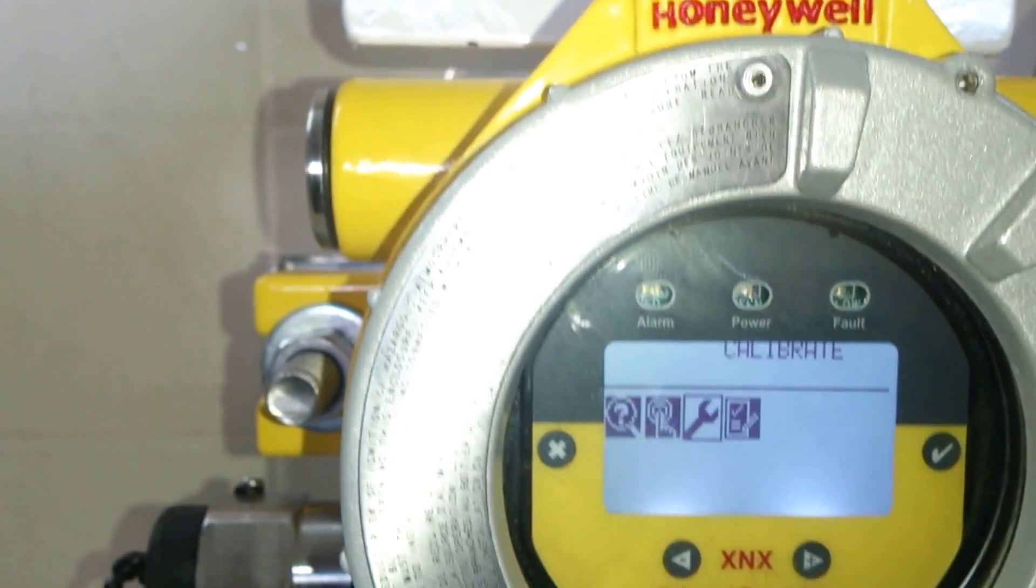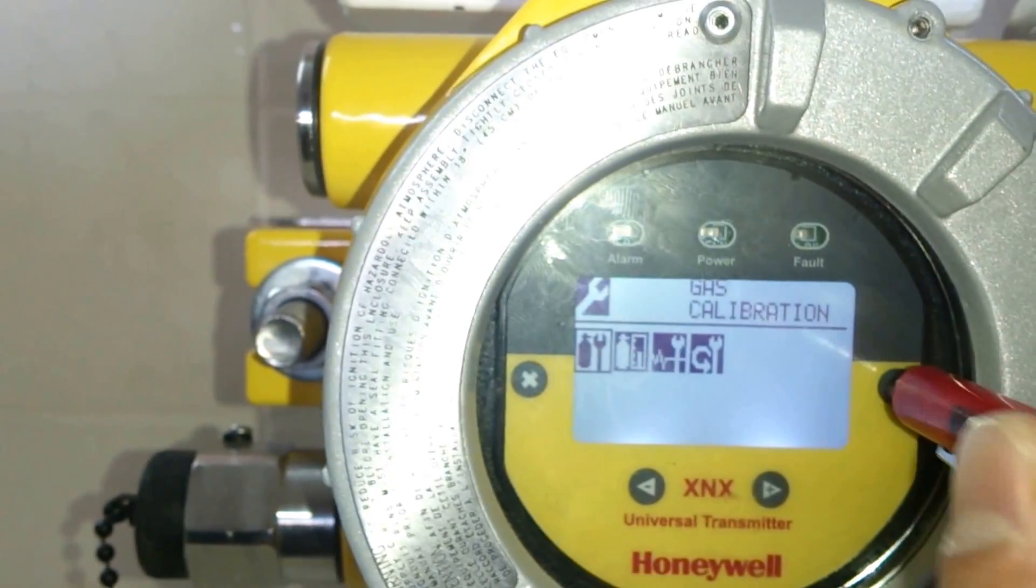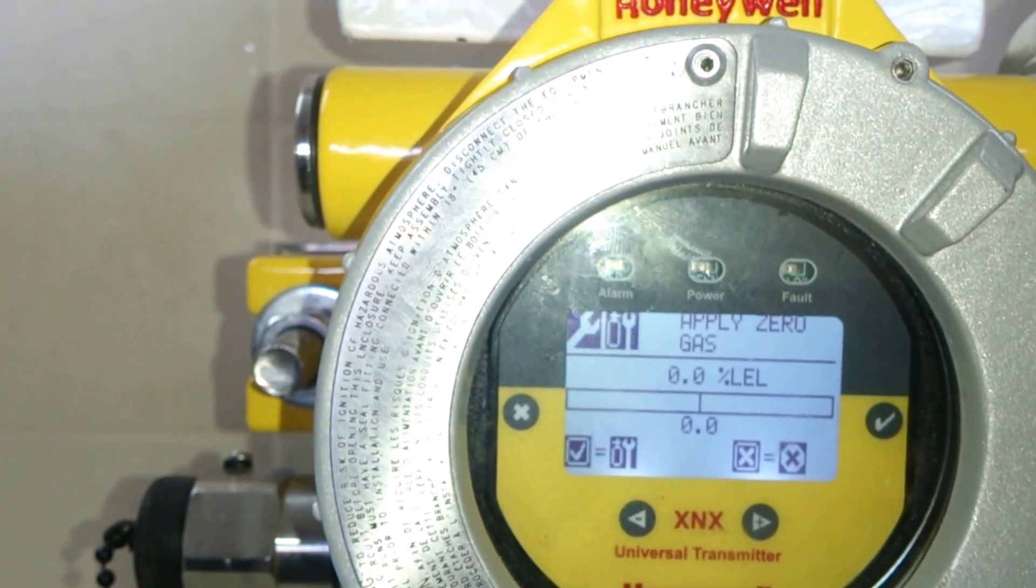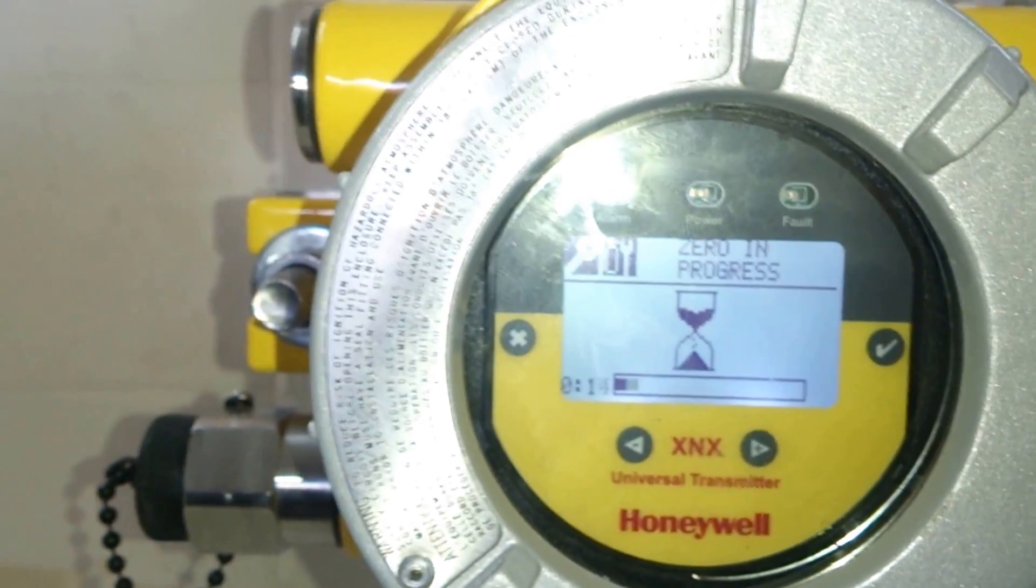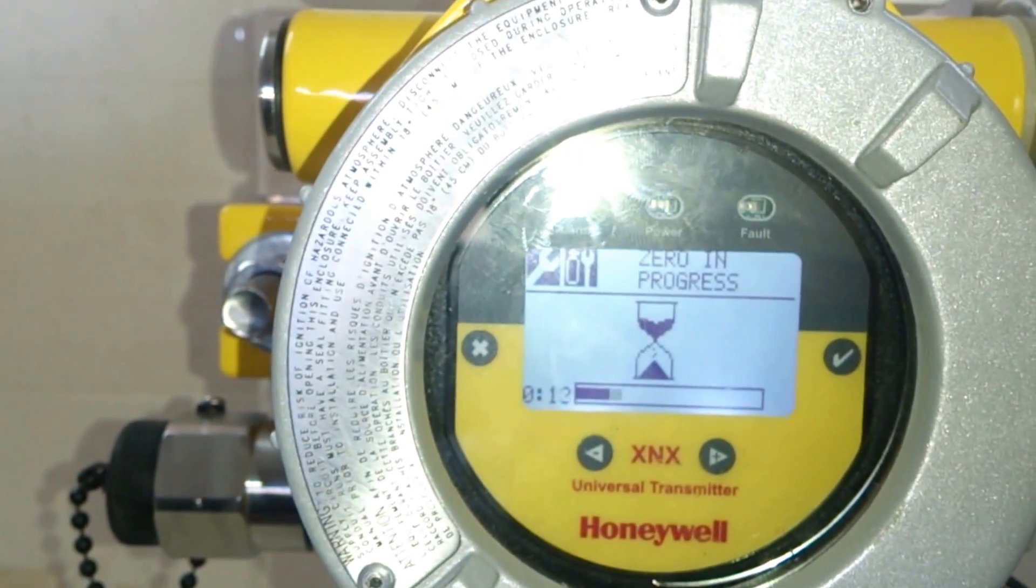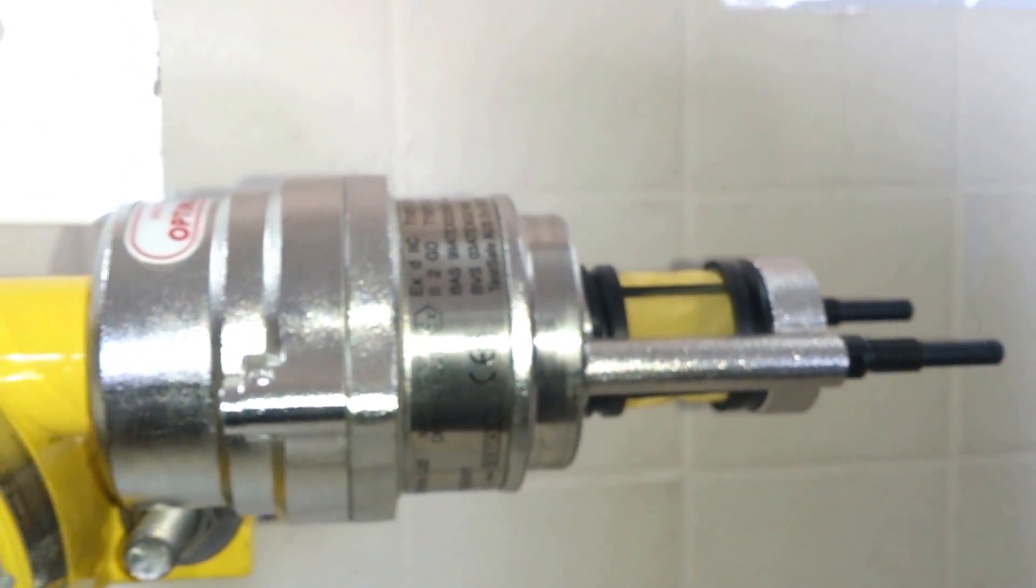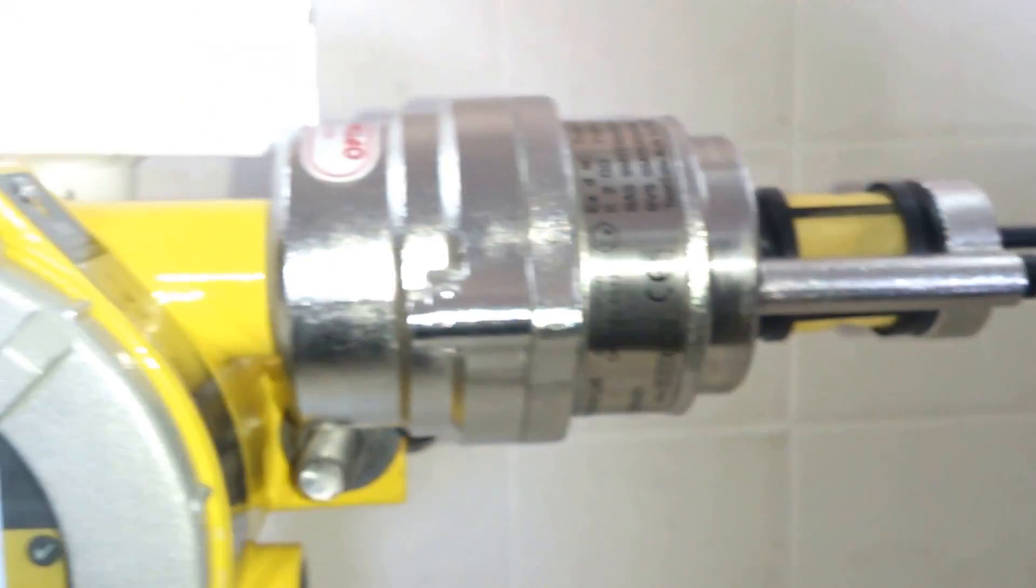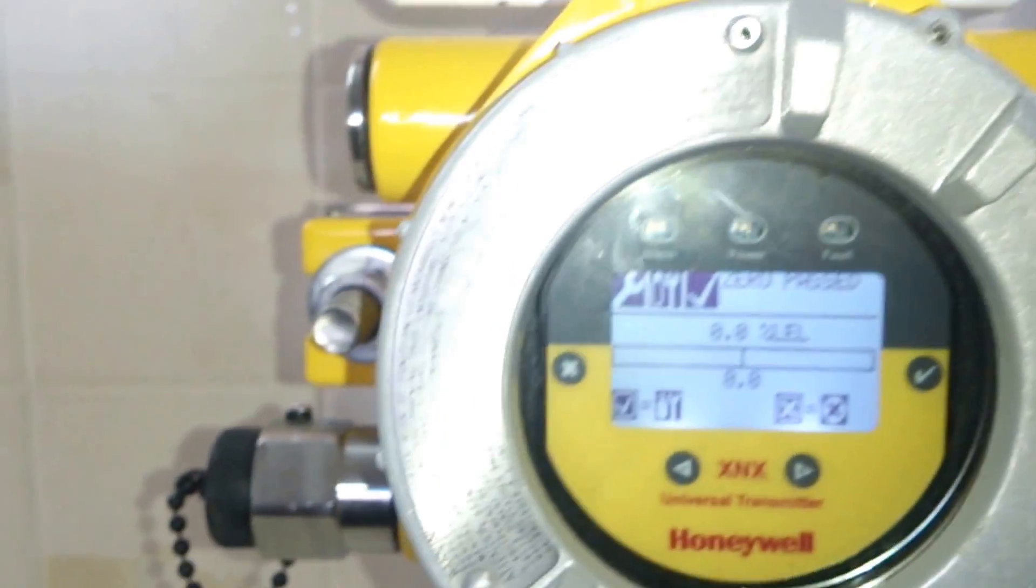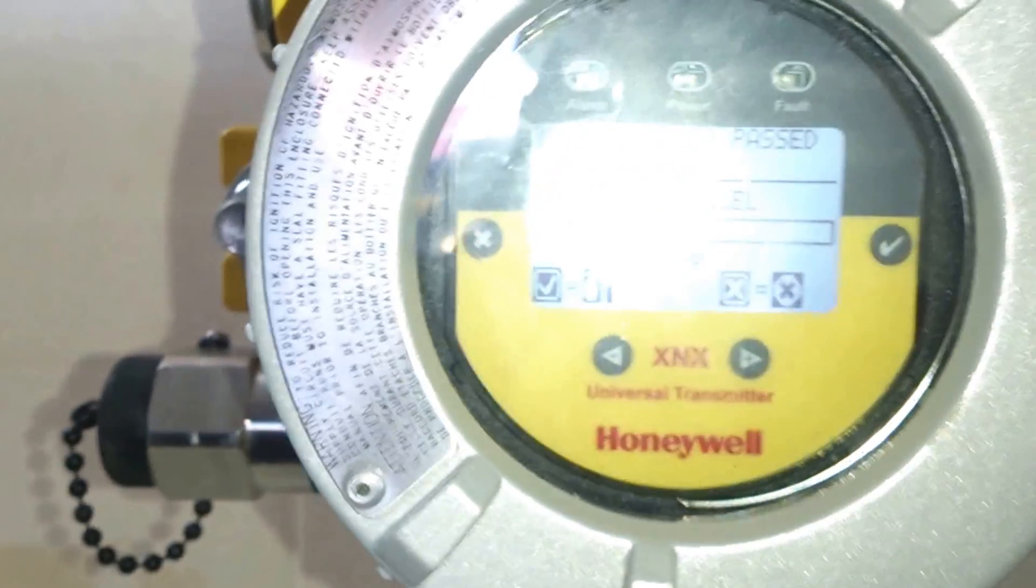We go to calibrate option. Select it. Under calibrate we go to gas calibration. First we apply zero gas, that is zero calibration. We select it. As you can see now zero is in progress. When zero calibration is in progress, the sensor is not connected to a cal gas or any sort of calibration and it is left open. Now you can see the zero test has passed. Now we save it.